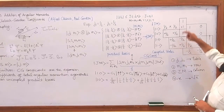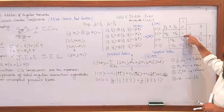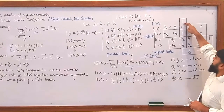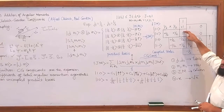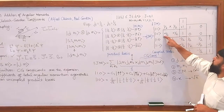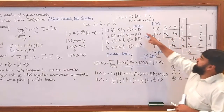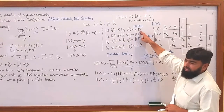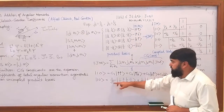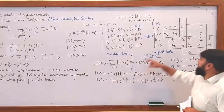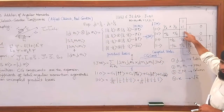You can practice to write the |1,1⟩ state. The value is 1 square root and you will go to plus half, plus half. And here you will get 1 instead of 1 over 2, because the value is 1 square root.